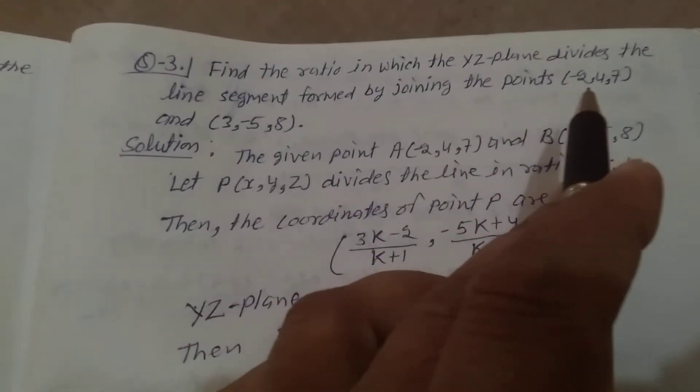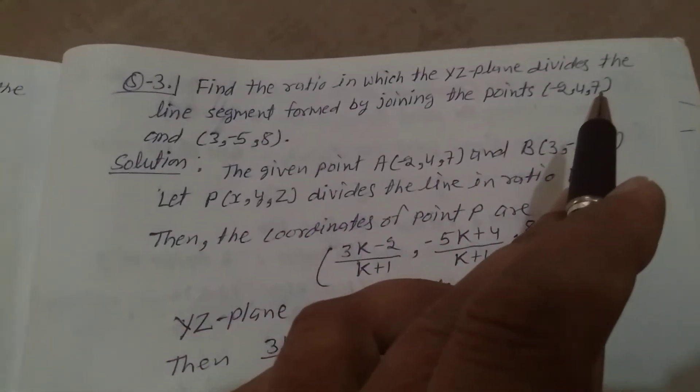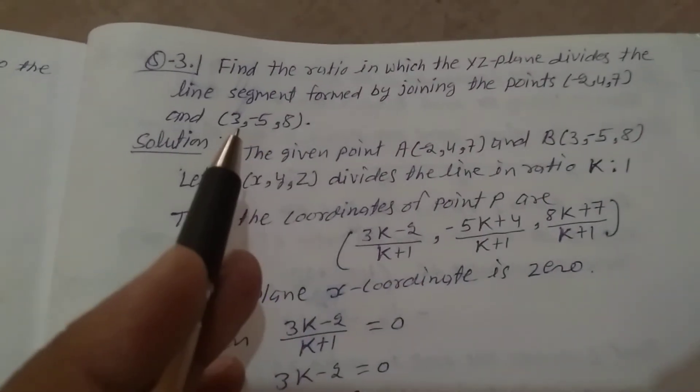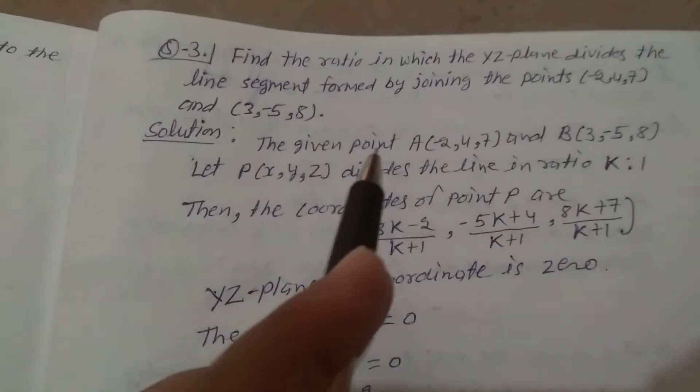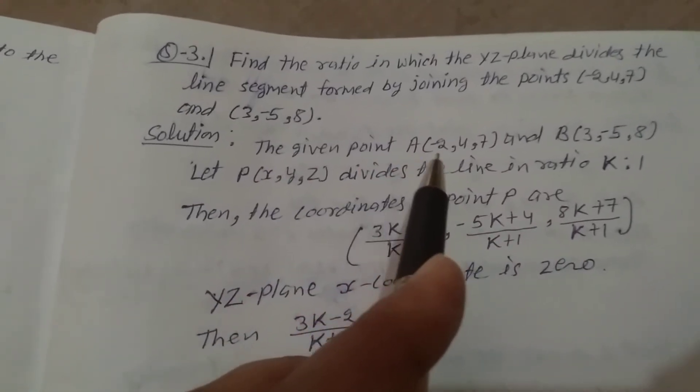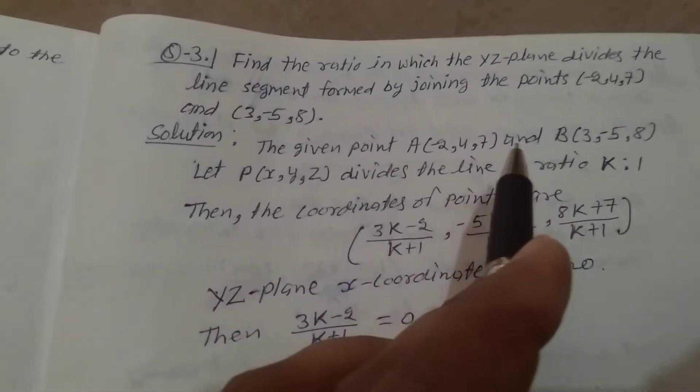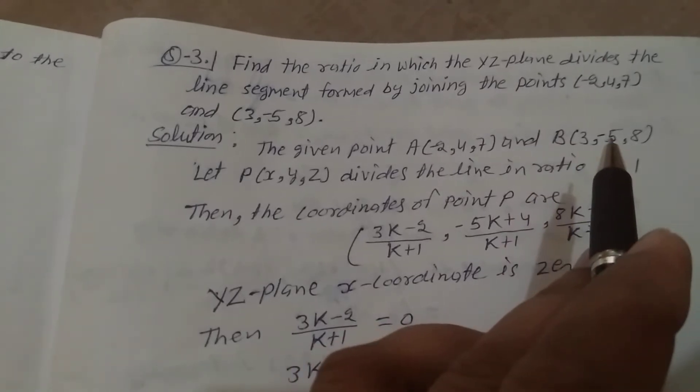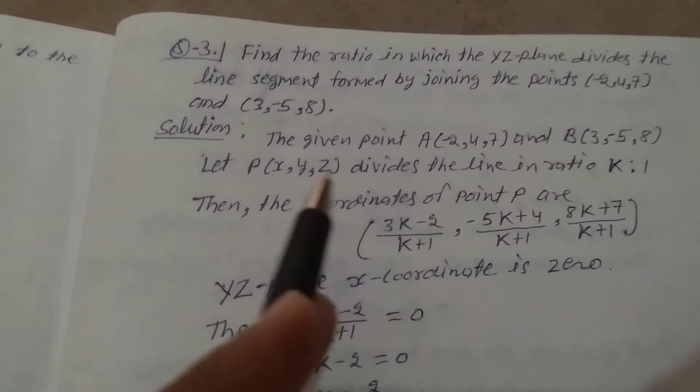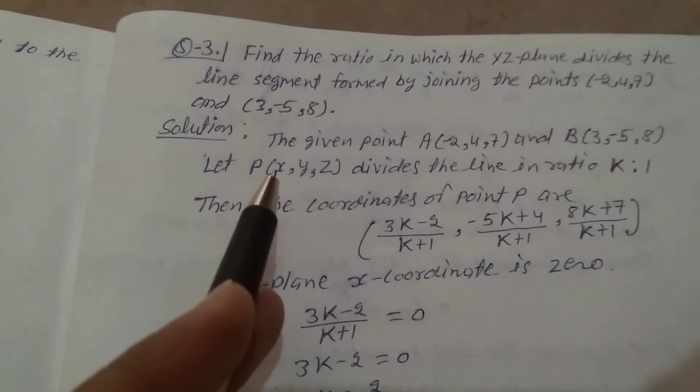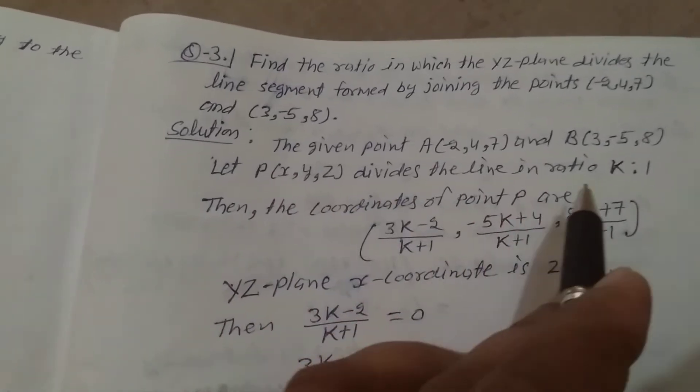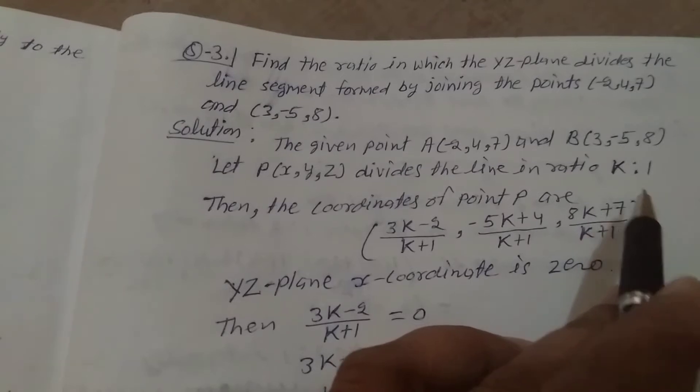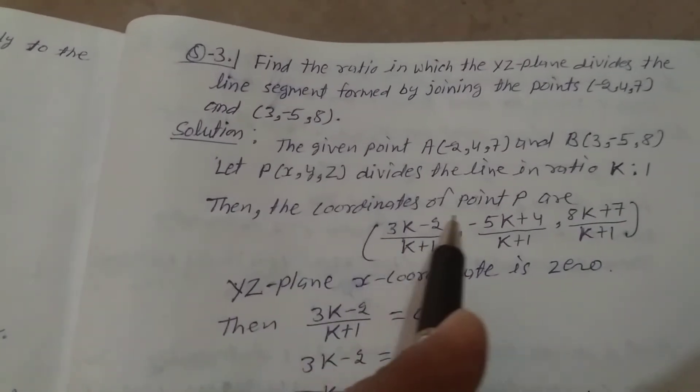(-2,4,7) and (3,5,8). Solution: The given points A(-2,4,7) and B(3,5,8), let P(x,y,z) divide the line in ratio K:1. Then the coordinates of point P are